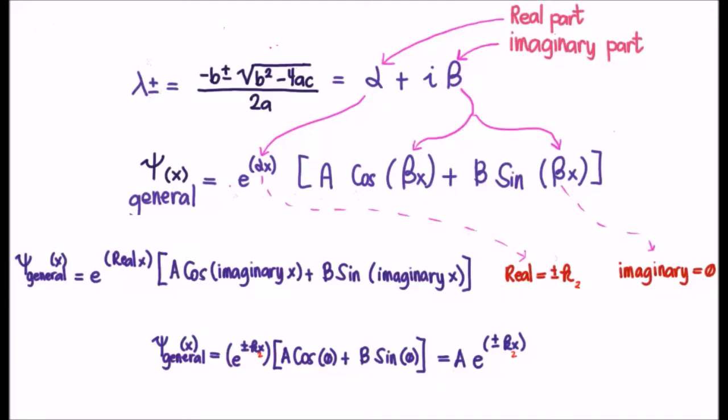So, in our current definition of the Time-Independent Schrodinger Equation, when we solved the characteristic equation for λ, we found that its real component α is simply plus or minus k₂, and we found that the imaginary component β is zero. So, let's plug those in.